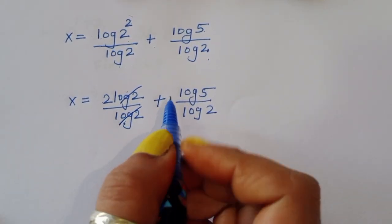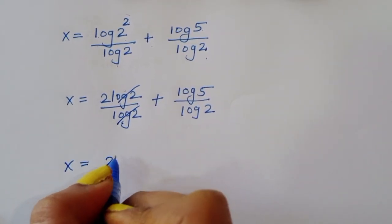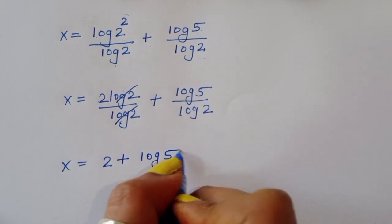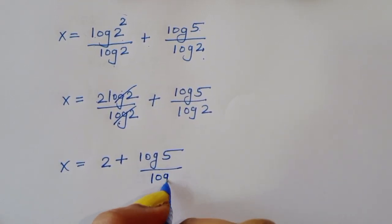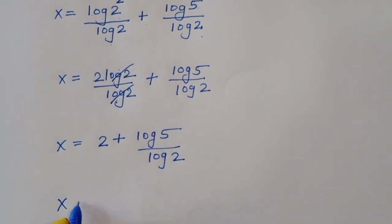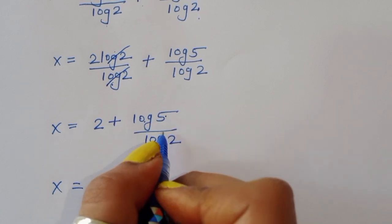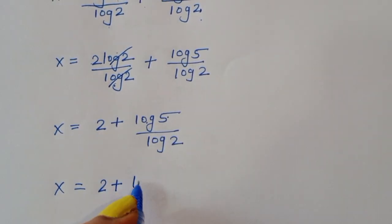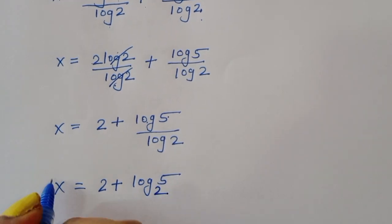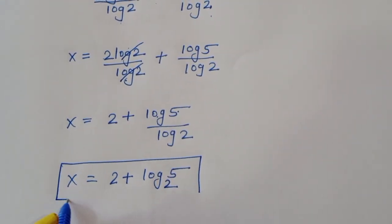Now 2 times log 2 divided by log 2 — the log 2 cancels — so x is equal to 2 plus log 5 divided by log 2. Or we can say x is equal to 2 plus log of 5 to the base 2. This is the value of x.